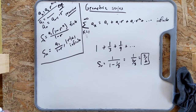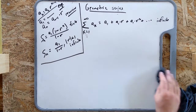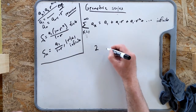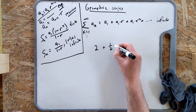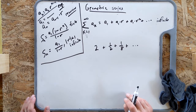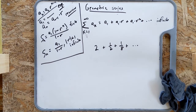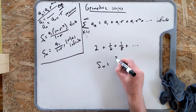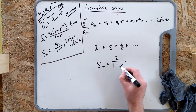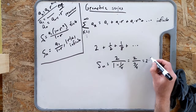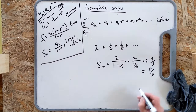Practice with an infinite series: 2 plus one-half plus one-eighth plus dot dot dot — it's shrinking, so it has a finite value. Pause and try it. The sum is a_1 over (1 minus r): a_1 is 2, r is one-quarter. S equals 2 over (1 minus one-quarter), or 2 divided by three-quarters. Flip and multiply: 2 times four-thirds equals eight-thirds.